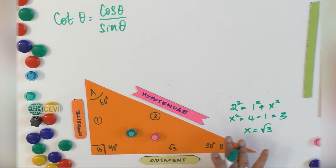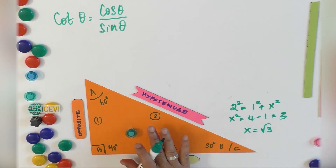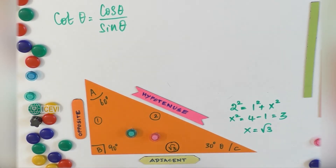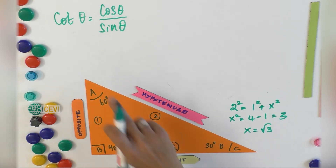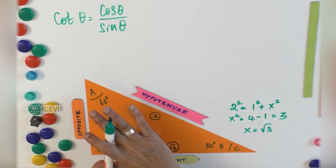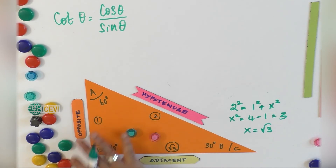From time to time you can remind the child about the calculation so that the child is not going to simply memorize. The child will understand how to find out these values. Now we have to find cot theta, which is nothing but adjacent divided by opposite.